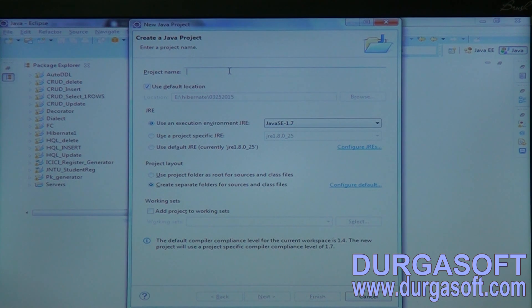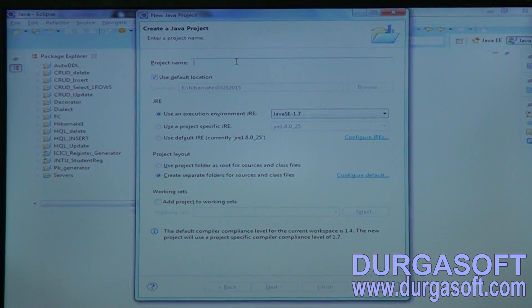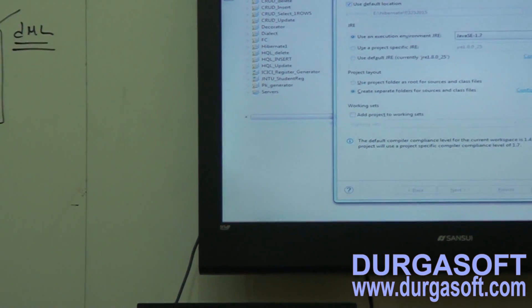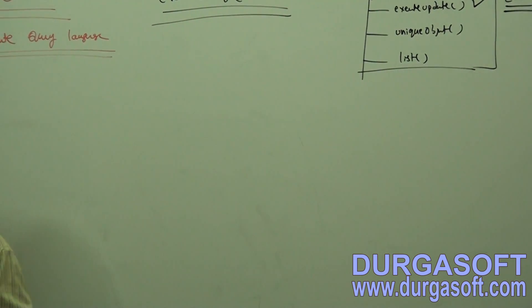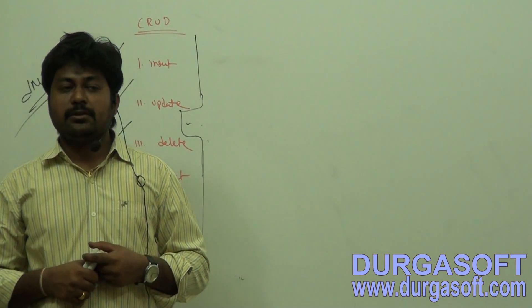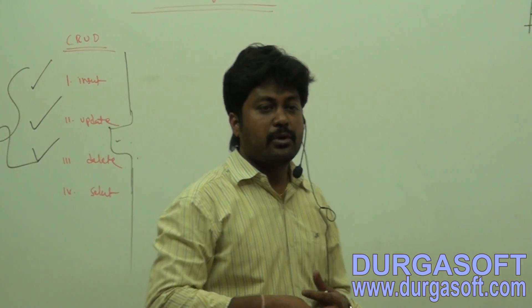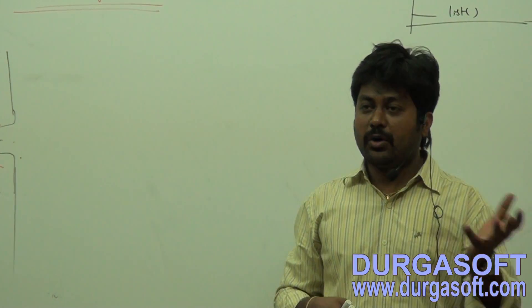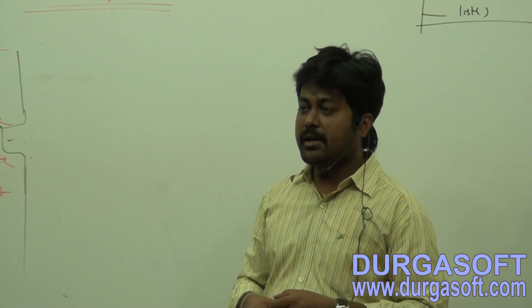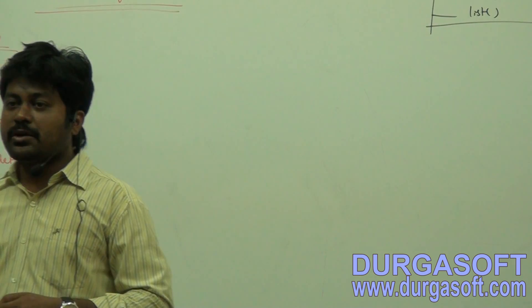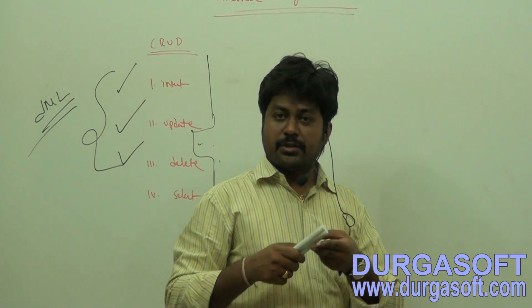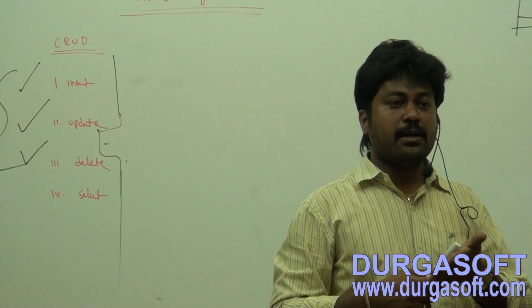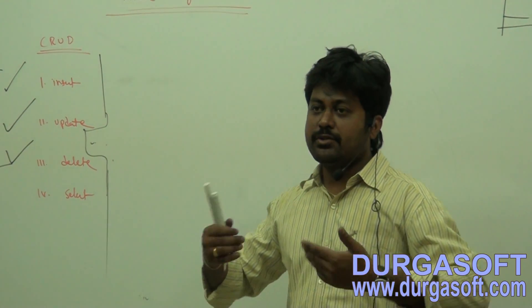So, select operations — how many types of select operations are there? We have many types: single record, single row, single column. Sometimes you can get data by using aggregate functions, like if you want to get average salaries or the sum of salaries. If you want to apply joins from multiple tables to get data using HQL, you can apply all these select operations — single row, single record, single column, complete table data, and multiple table join operations.